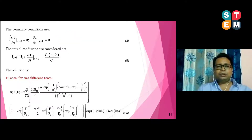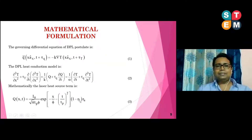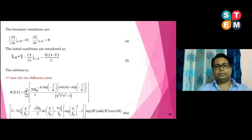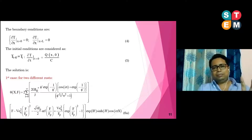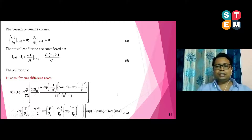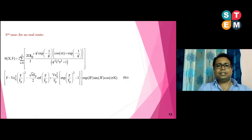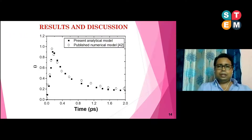Applying the Finite Integral Transform to equation 2 converts the higher-order non-homogeneous equation into a second-order linear homogeneous form. This yields three case studies: two different roots (equation 6a), two similar roots (equation 6b), and no real roots (equation 6c). These three equations represent one solution valid for three different mathematical cases.